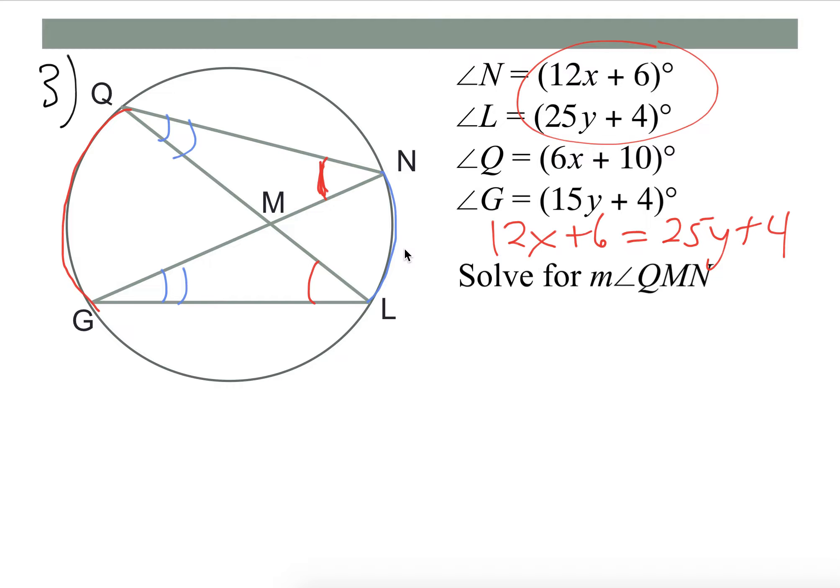And then using the same principle, Q intercepts arc NL, and so does angle G. So those have to be congruent, so we can set those equal to each other.